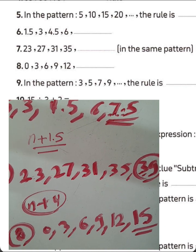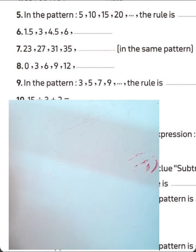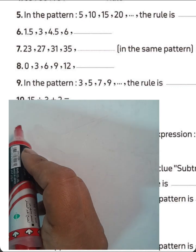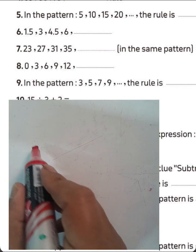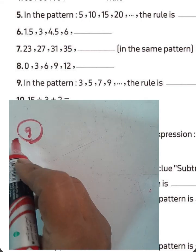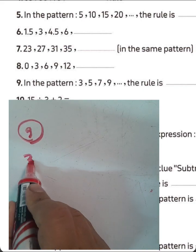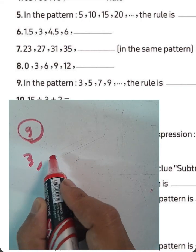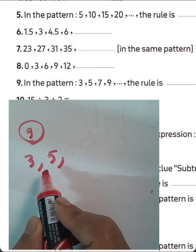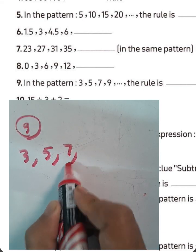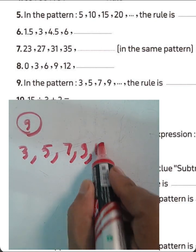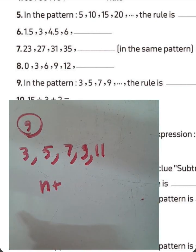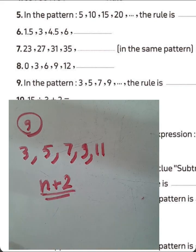Question number 9. Look at question number 9 with me. In the pattern: 3, 5, 7, 9. The rule here is N plus 2.